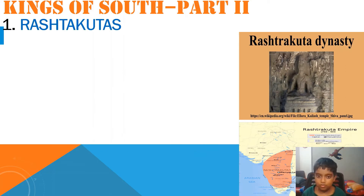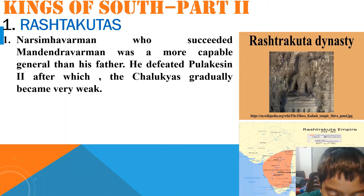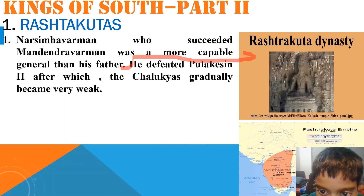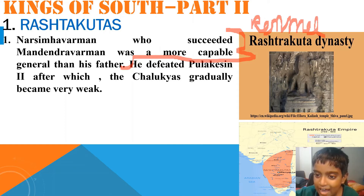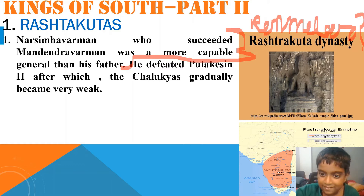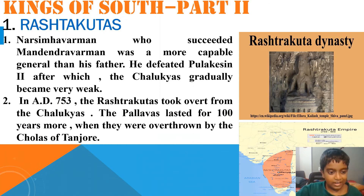Today we are going to cover Kings of South part 2: Rashtrakotas. Krishna I defeated Pulakesi II, after which the Chalukyas gradually became very weak. In AD 753, the Rashtrakotas took over from the Chalukyas.